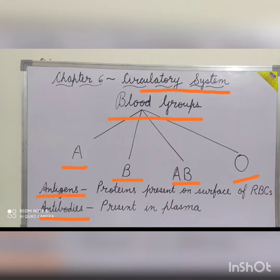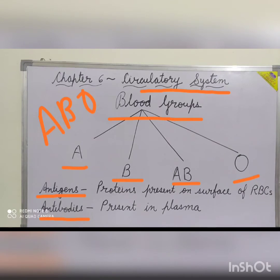This system of division of the blood groups is known as the ABO system. According to this system, there are two antigens, A and B, associated with their two antibodies, small a and small b.